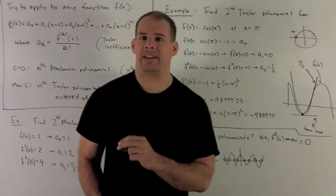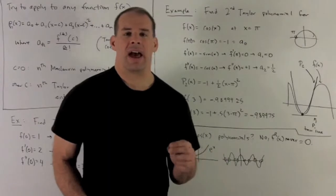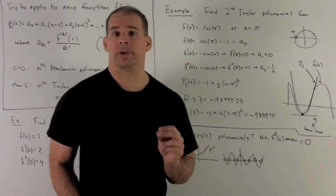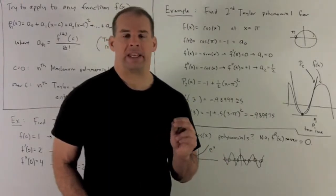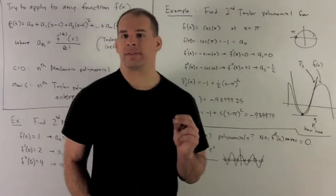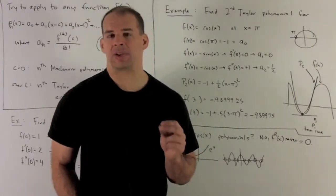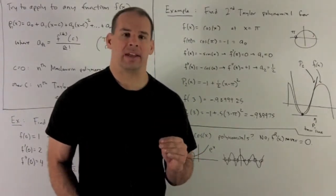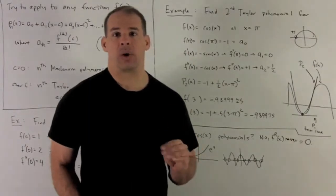Final question. I pulled out e to the x and cosine of x. How do we know that these are not polynomials? Well, take e to the x. If I keep taking derivatives of e to the x, we keep getting e to the x back. There's no way I can get the derivative to flatline to 0 everywhere.